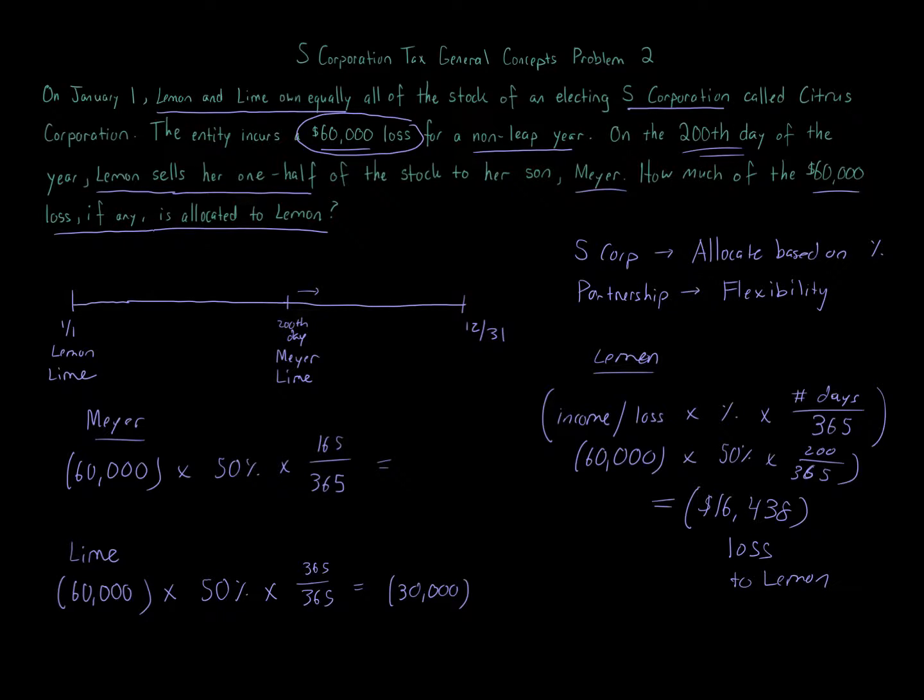If I told you that Lemon sold 10% of the ownership of the stock to Meyer on the 200th day, you would do $60,000 times 50% times 200 over 365, which is $16,438 loss to Lemon, plus another calculation: $60,000 times 40% times 165 over 365, and you would add it to the $16,438.